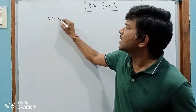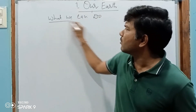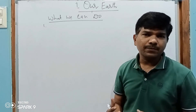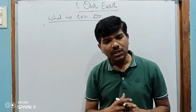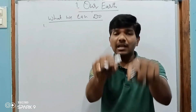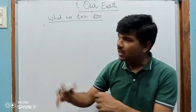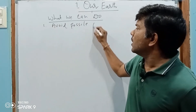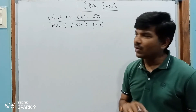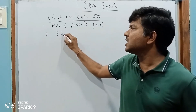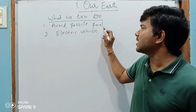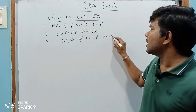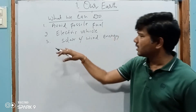Then what should we do? Whatever activities I have written, we have to reverse them — do the opposite to save our environment, save our ecology, and save our biodiversity. First, avoid fossil fuels — petroleum and diesel products and vehicles should not be used. Encourage electric vehicles. Next, depend on solar and wind energy. A lot of technology has improved. We are living in a tropical region, so solar energy is very possible for us.